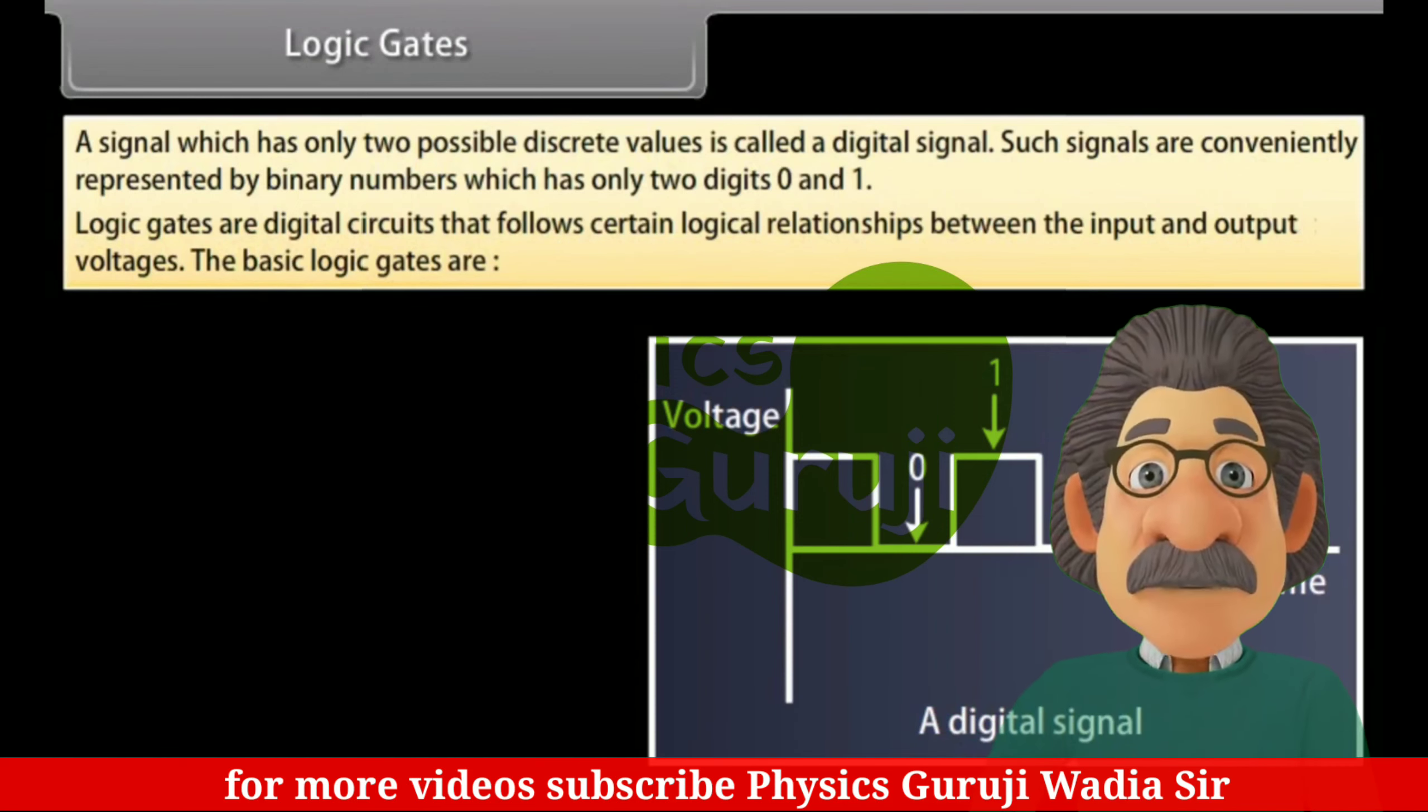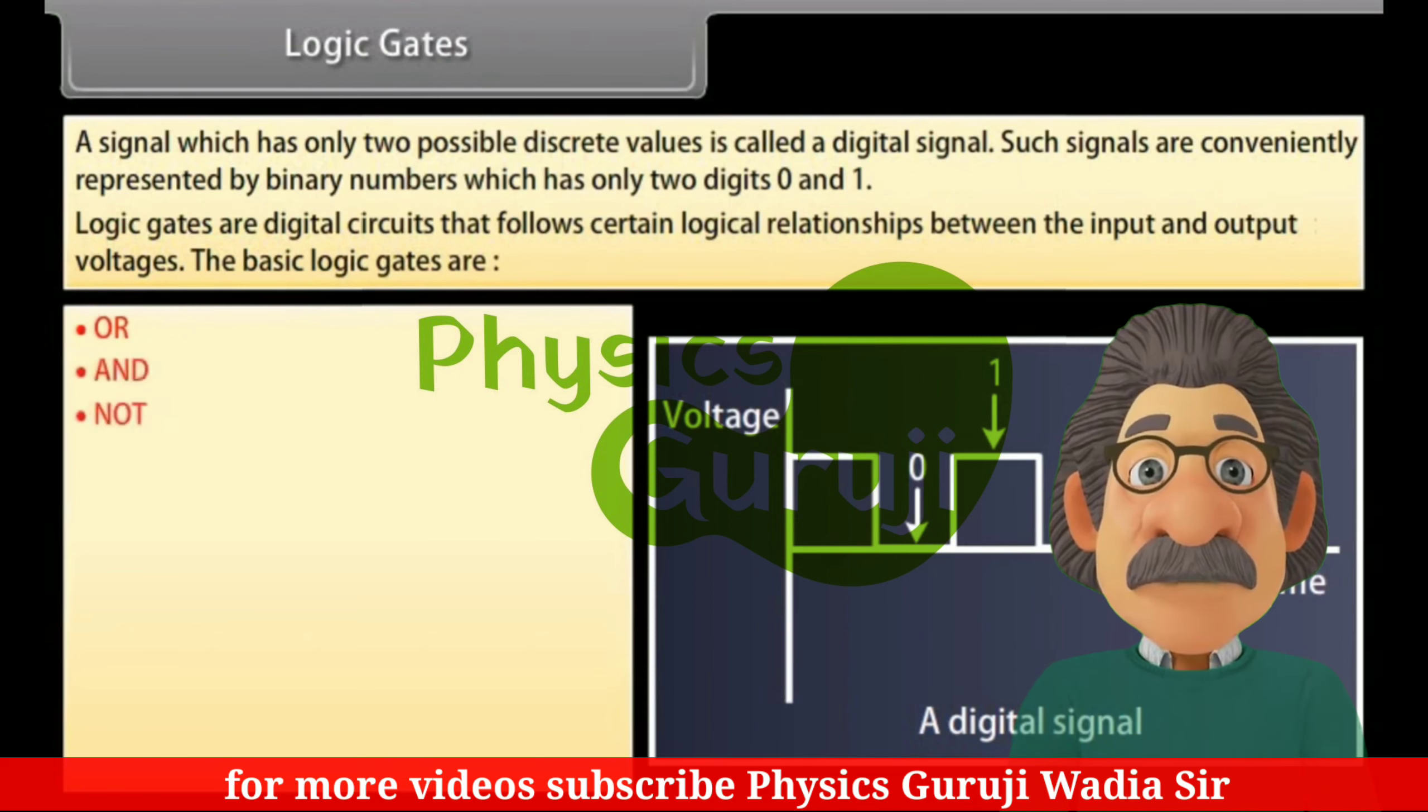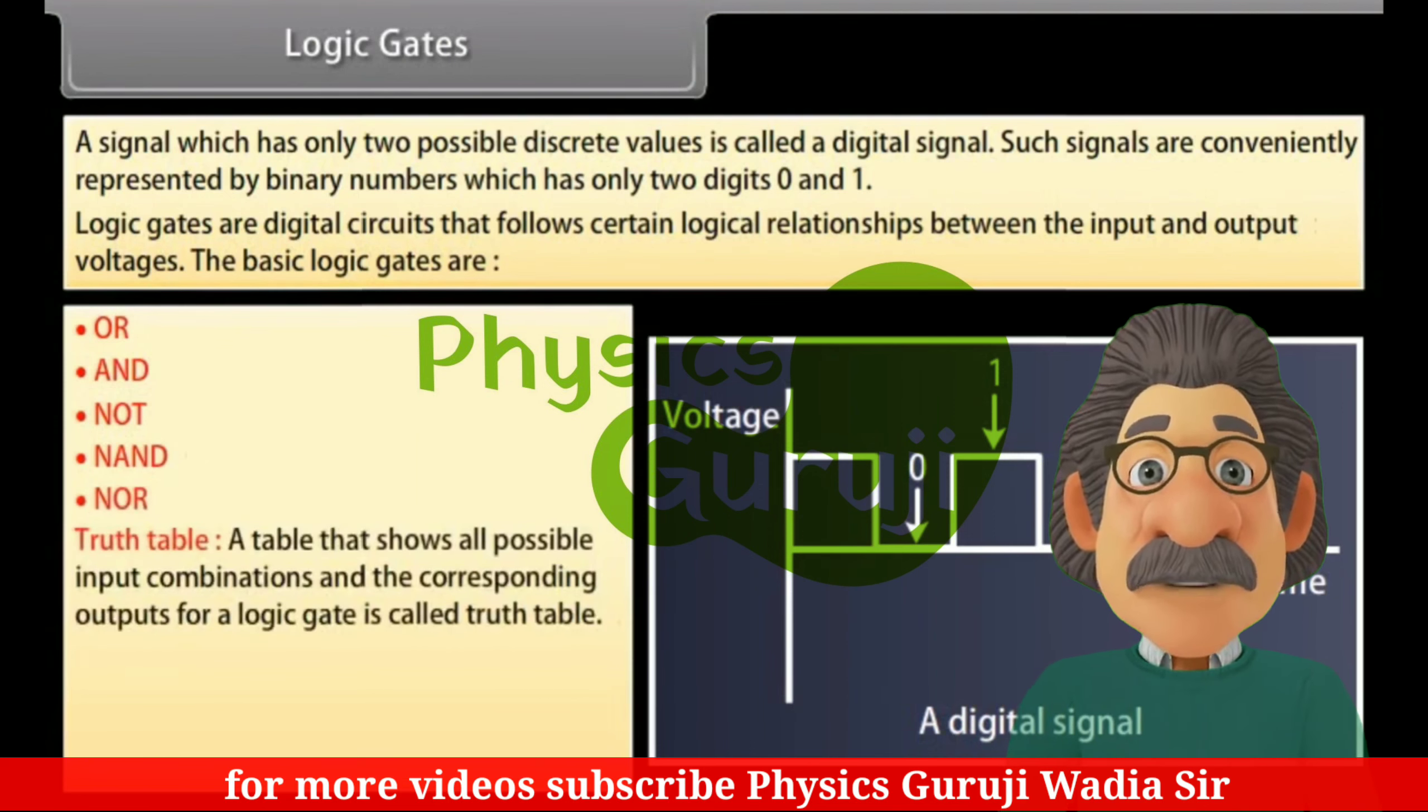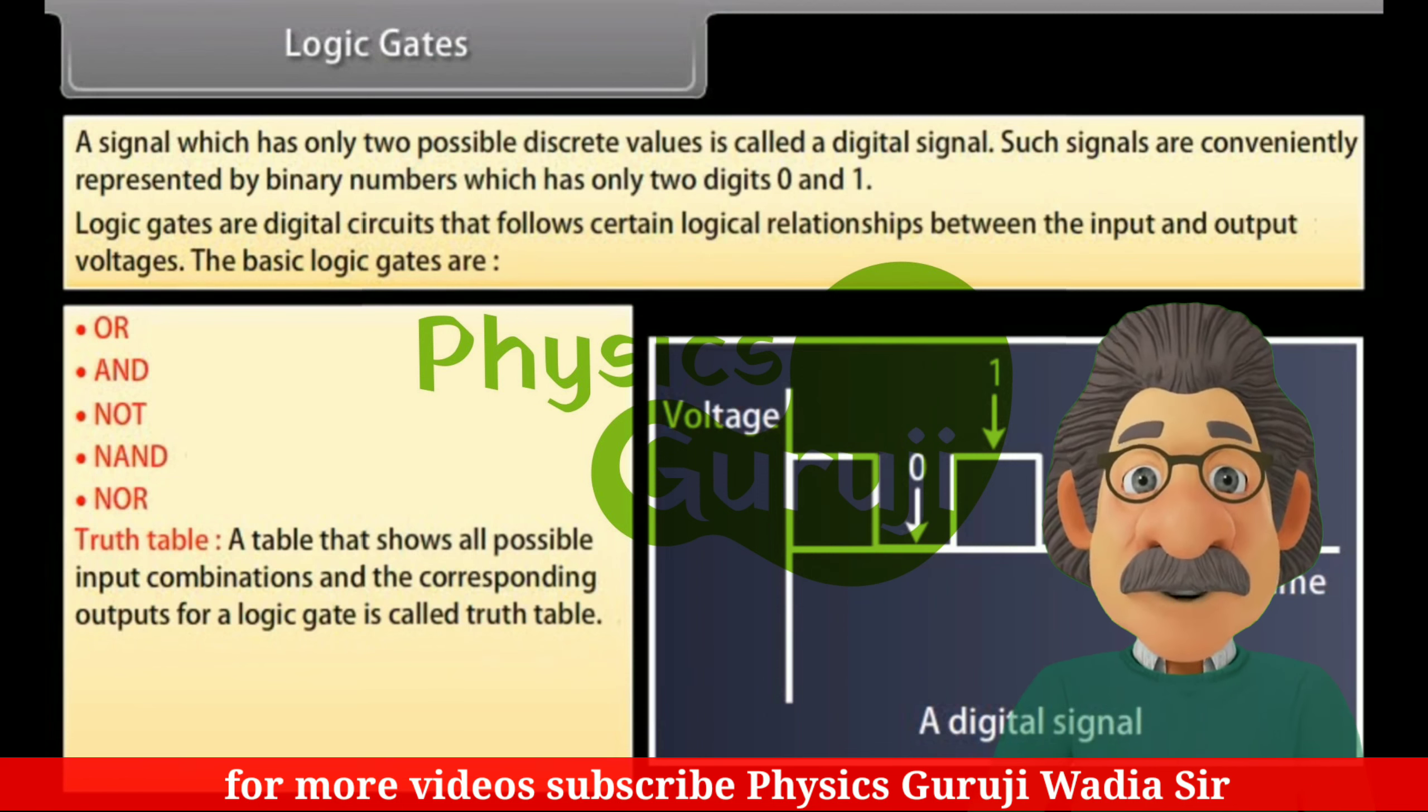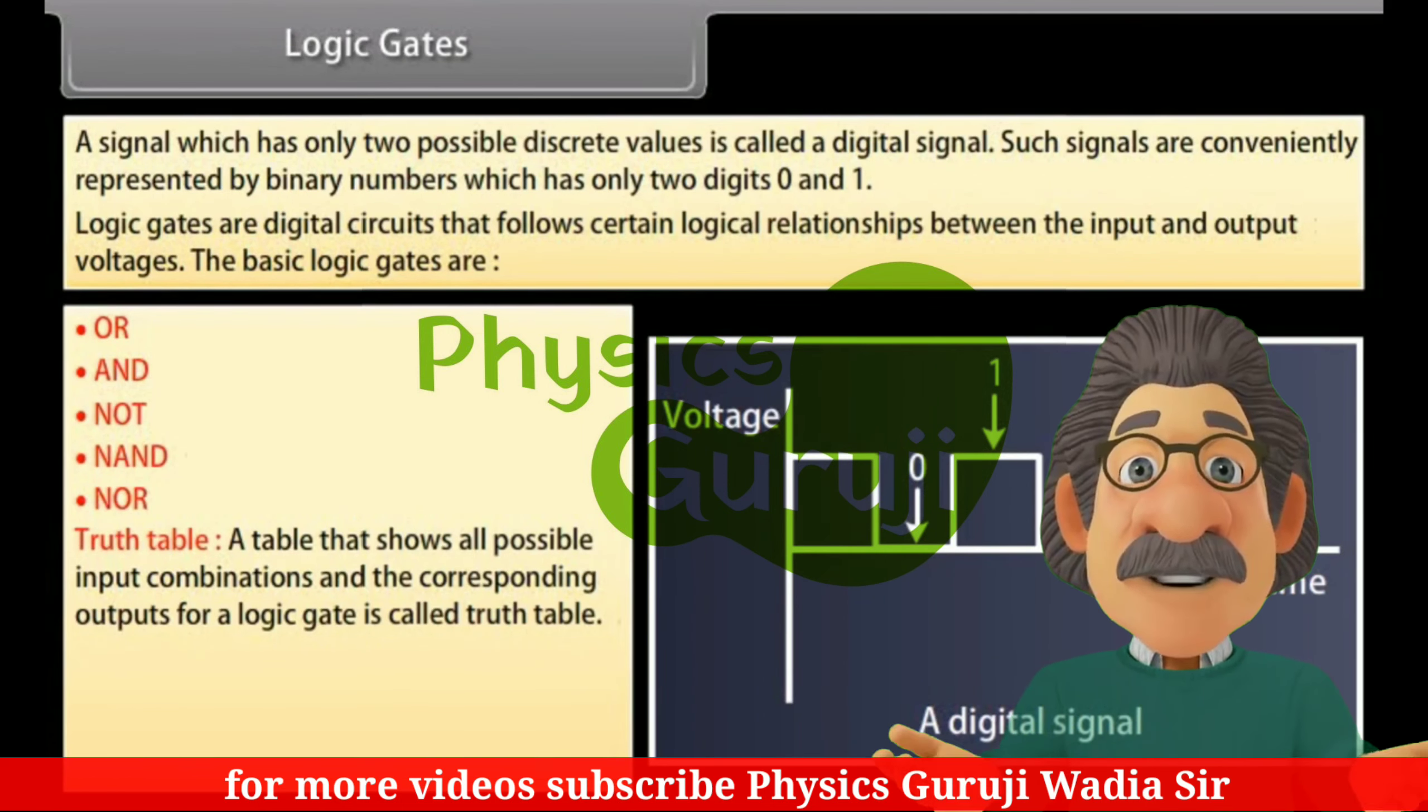The basic logic gates are OR, AND, NOT, NAND, NOR. A truth table shows all possible input combinations and the corresponding outputs for a logic gate.